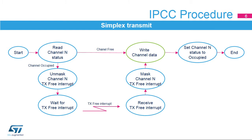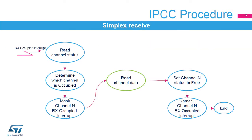When the channel-free interrupt is generated, the channel-free interrupt is masked and the message can be written in the channel data buffer. Subsequently, the channel status flag is set to Occupied, which triggers a channel-occupied interrupt for the receiving side. When the channel status flag is checked to be free, a message can be directly written in the channel data buffer. When a channel-occupied interrupt is generated, the receiving side determines which channel is occupied and masks the appropriate channel-occupied interrupt.